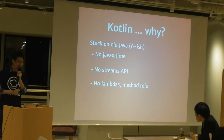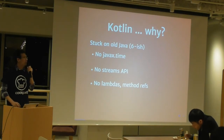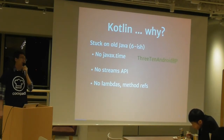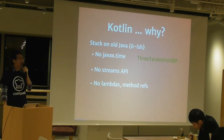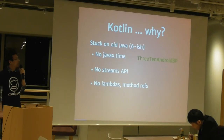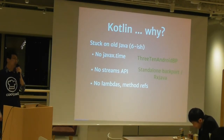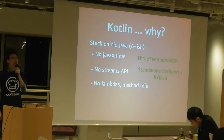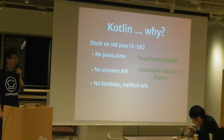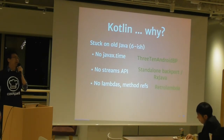We have no lambdas and no method references in Android. But actually if you think about this hard enough, this is not true at all. For Java time for example, you can use the portable version called ThreeTenABP — which is an Android backport. So this is no longer true. Another thing is about the Stream API — if you've been doing Android long enough, you'll know that we have RxJava to support that. You can use that in Android development. And you can also use Retrolambda to support Android development. So these arguments actually are not that true.